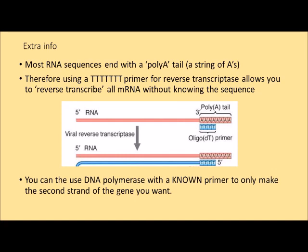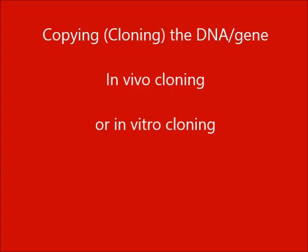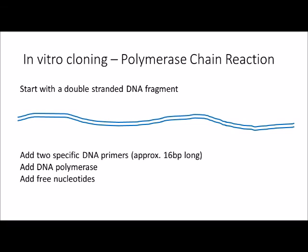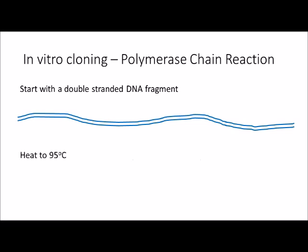So we have isolated a gene, either from DNA or from RNA. The next stage is to clone it, and there are two ways of doing that as well. The first way is in vitro cloning, which is effectively the polymerase chain reaction. Similar to RT-PCR, we would have two specific DNA primers and we would amplify the DNA.